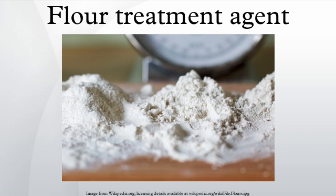Flour bleaching agents are added to flour to make it appear whiter, to oxidize the surfaces of the flour grains, and help with developing of gluten. Oxidizing agents are added to flour to help with gluten development. They may or may not also act as bleaching agents. Originally flour was naturally aged through exposure to the atmosphere. Oxidizing agents primarily affect sulfur-containing amino acids, ultimately helping to form disulfide bridges between the gluten molecules.